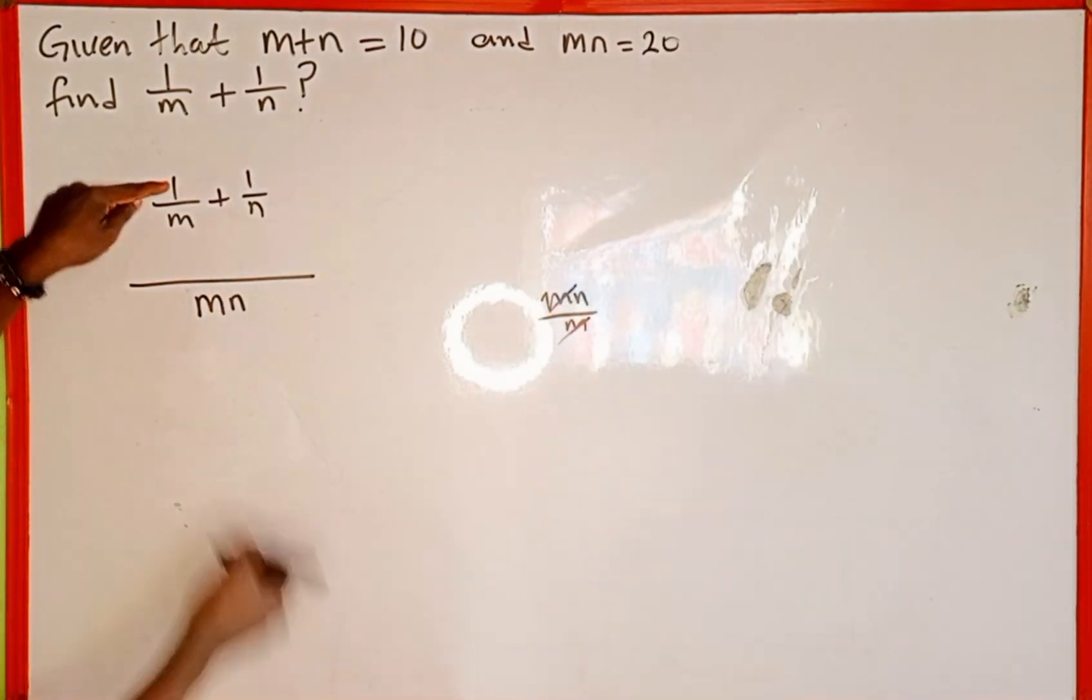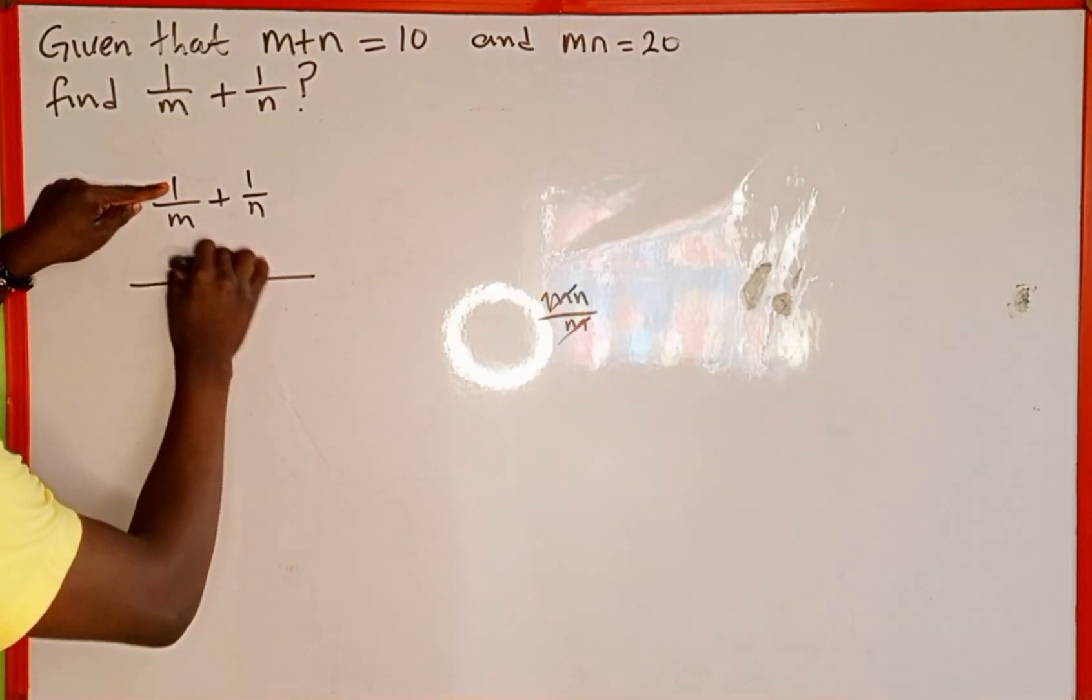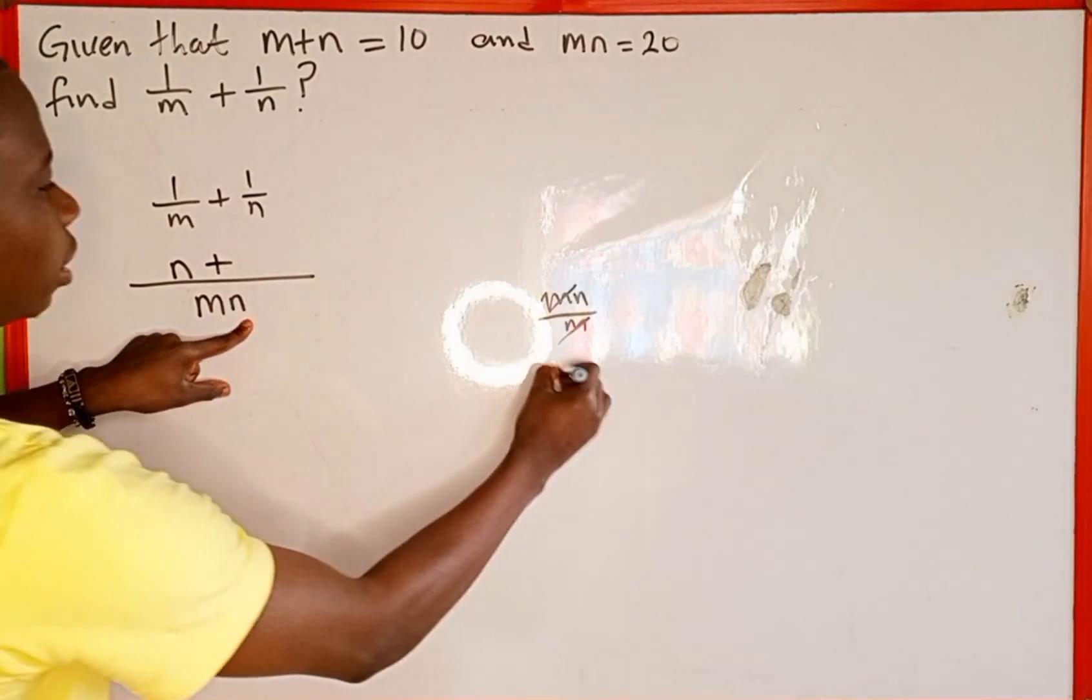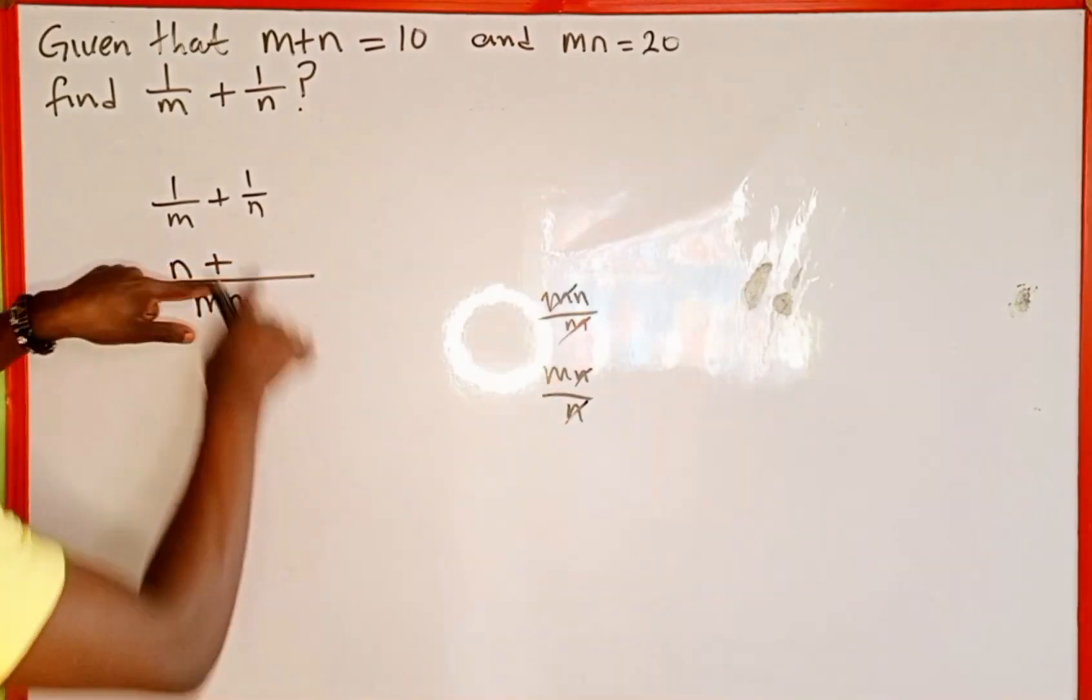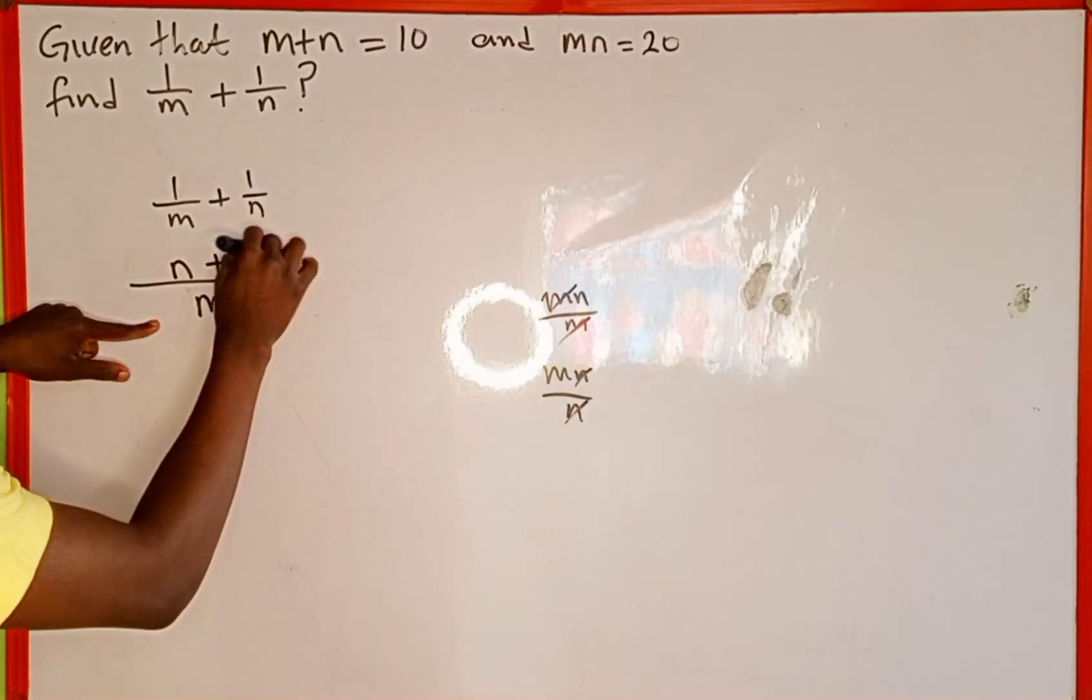Then plus m n divided by n—the n's cancel leaving m, and m multiplied by 1 gives us m.